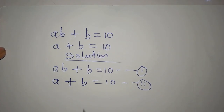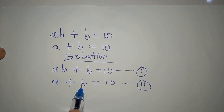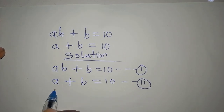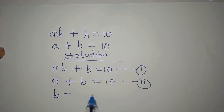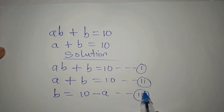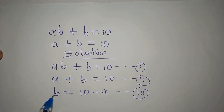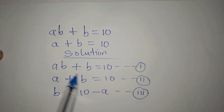We are to solve this problem simultaneously. What we do is make B the subject from equation 2, so that we have B equals 10 minus A — this becomes equation 3. The next step is to substitute equation 3 into equation 1.